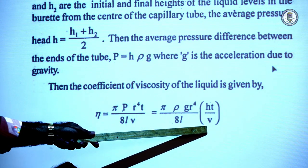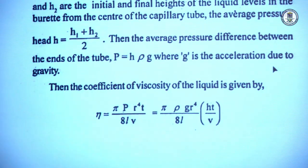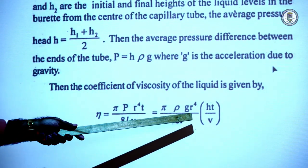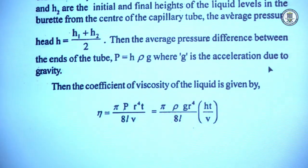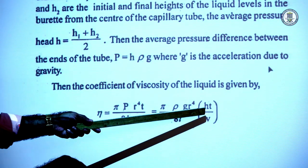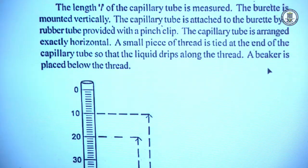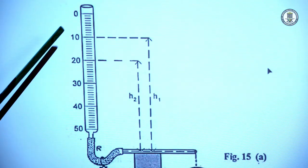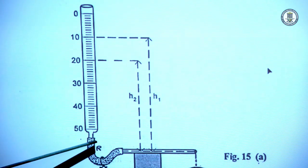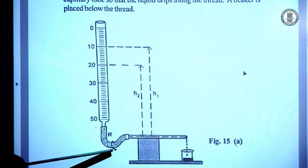We can take different values — for a certain range or certain volume of liquid flowing, the pressure head may differ and we record the time. So our aim is to find H·T/V. The apparatus arrangement consists of a burette arranged vertically with the capillary tube attached via a rubber tube, and a stopper is provided.